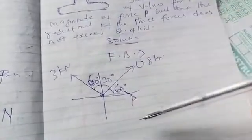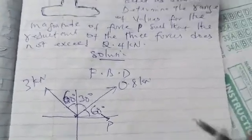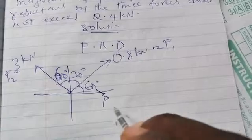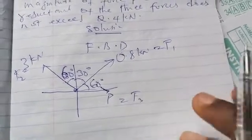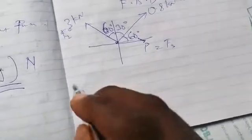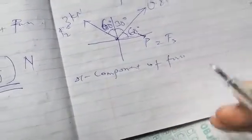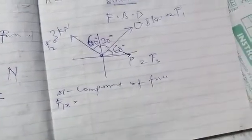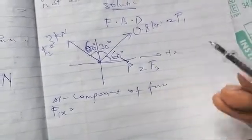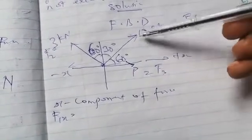We now label the forces: the 0.8 kN force is F1, the 3 kN force is F2, and force P is F3. We start with the x-component of forces. For F1x, resolve F1 in the x direction — hold the tip of the arrow and pull it to meet the X line. Positive x is to the right, negative x to the left.